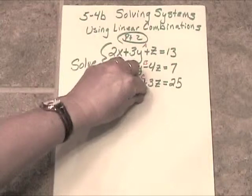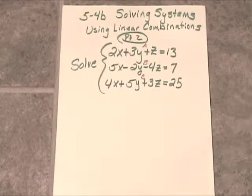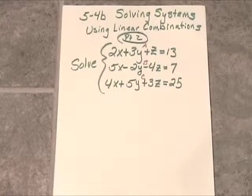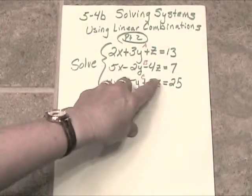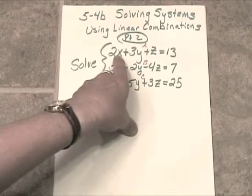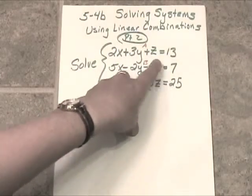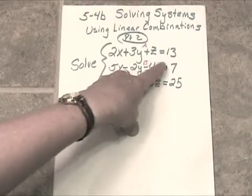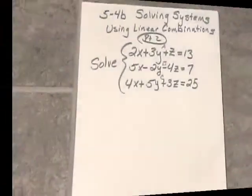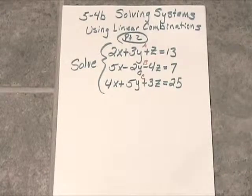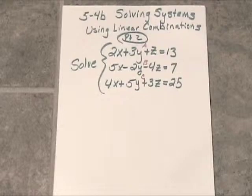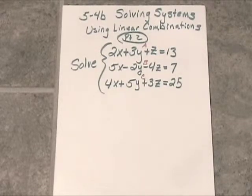I'm going to rearrange these algebraically and find a way to get rid of one of the variables, and in this case I think it's going to be the z. Because if I take Equation A and B, and I multiply Equation A through by a positive 4, then when I add these two equations, the z's will drop out. Let me go ahead and multiply Equation A the whole way through by positive 4, and let's see what that will look like.